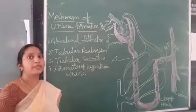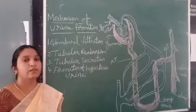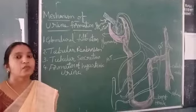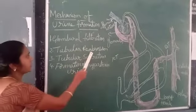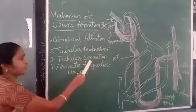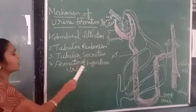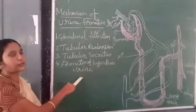Formation of urine involves four stages. They are glomerular filtration, tubular absorption, tubular secretion, and formation of hypertonic urine.